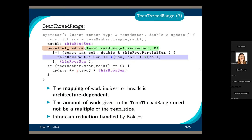Note that which portion of the work is given to each thread is completely architecture-dependent, so it won't be specific to each thread doing a particular set of the work described in M. Also note that M does not have to be a multiple of the team size — the team size being the number of threads in the team.